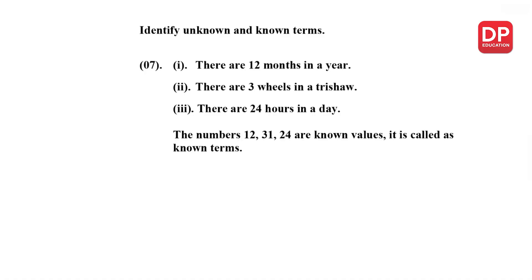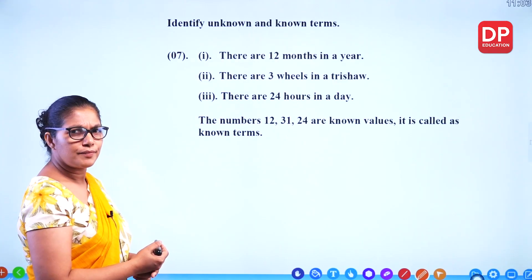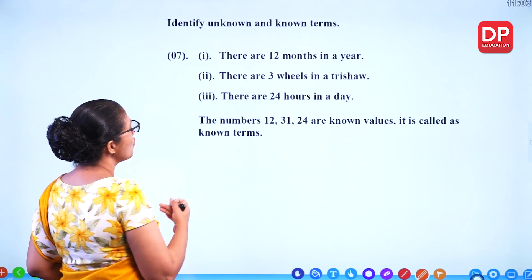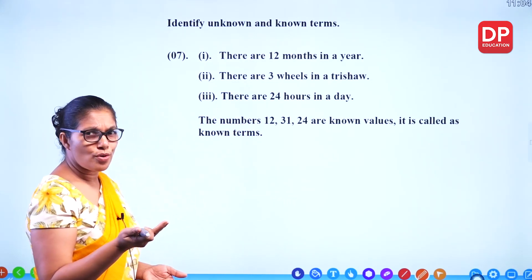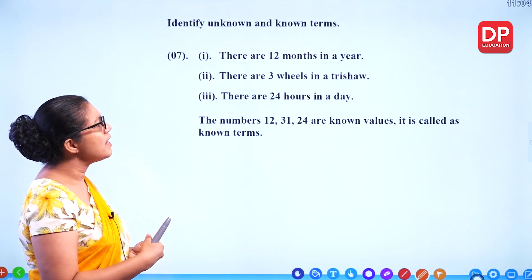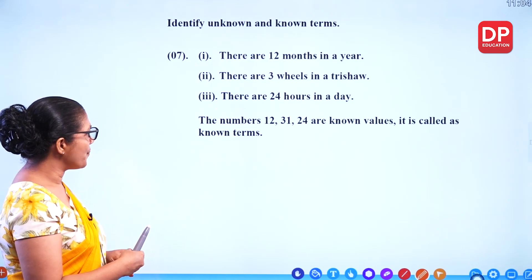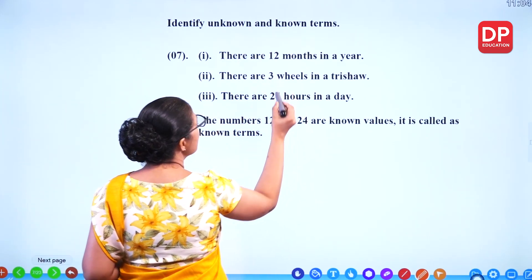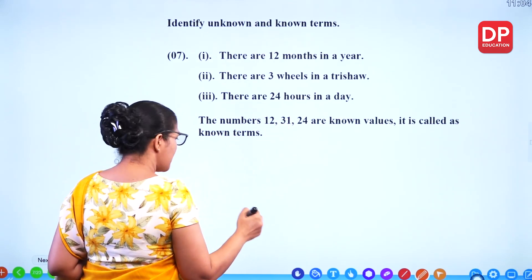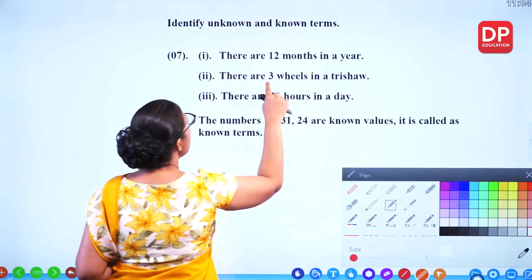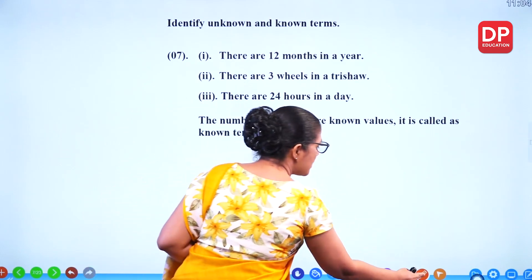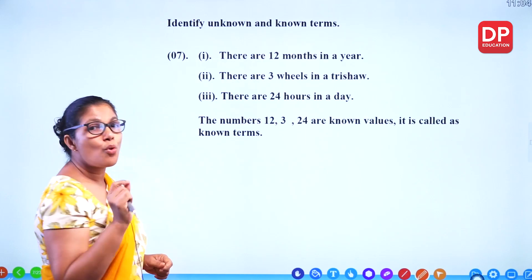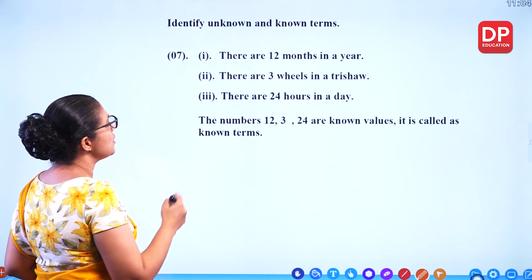Identify unknown and known terms. There are 12 months in a year — we know that, so that's known. There are 3 wheels in a trishaw — that's why we call it a tri, meaning 3 wheels, or 3-wheeler. There are 24 hours in a day. So the numbers 12, 3, and 24 are all known values — they are called known terms.